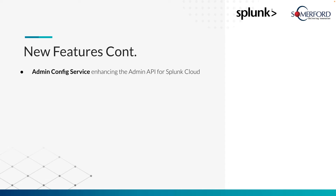Another new feature: admin config service — really the admin API for Splunk Cloud. If you're running in Splunk Cloud, no longer do you need to go into the GUI to create an index, onboard data, or whatever. You can actually do that via a line of code essentially — an API call. So if you have new data coming into the environment, you can create the index, create a role, send that data in, and do all of that without any manual intervention in Splunk Cloud. If you want to expand or you've got a new data set coming in, this can be really useful for those situations.